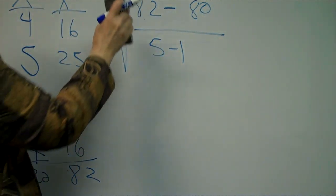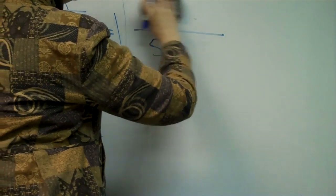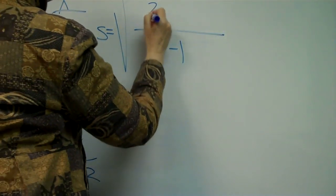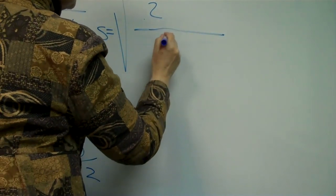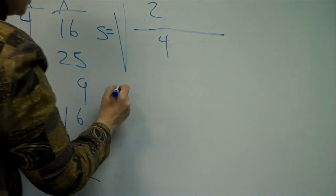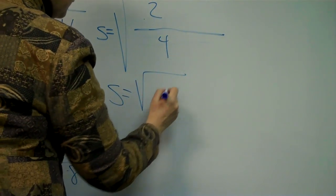And so now I'm ready to do the reduction of the numerator and denominator. 82 minus 80 is 2. 5 minus 1 equals 4. So I'm back to the standard deviation is equal to the square root of 0.5.